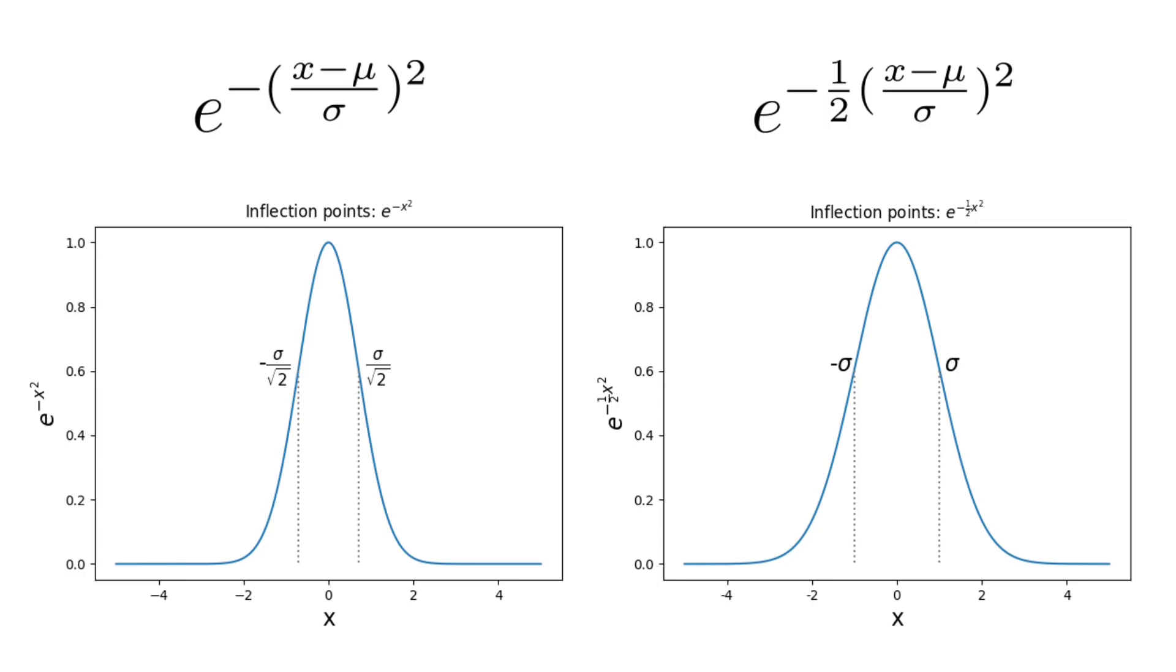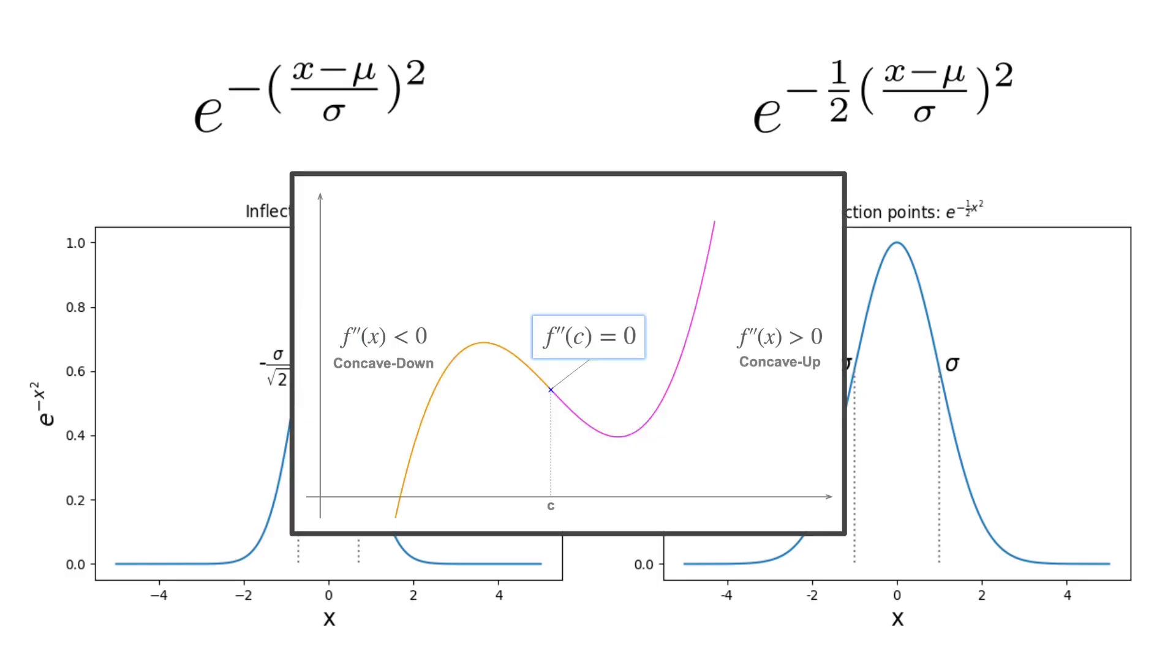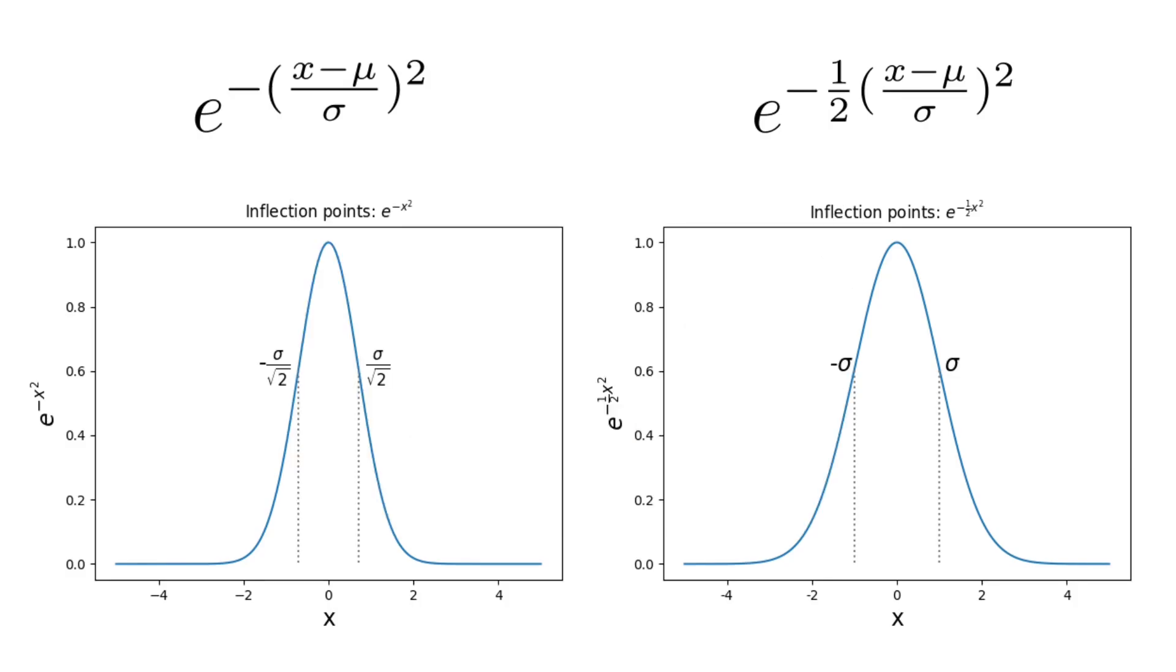Another not so intuitive part, at least not for me, is to multiply the exponent with 1 over 2. I mean, I know that mathematicians like to multiply the powers of 2 with 1 over 2 to obtain a nice derivative, but here it's more than that. In this case, the reason is related to the inflection points of the equation or the points where the second derivative is 0, or the points where the curvature changes the sign. If we don't do that multiplication, then our inflection points appear at minus sigma over square root of 2 and sigma over square root of 2, instead of minus sigma and sigma. Which, yeah, it's nice, but to be honest, I don't understand why this is such a big deal.